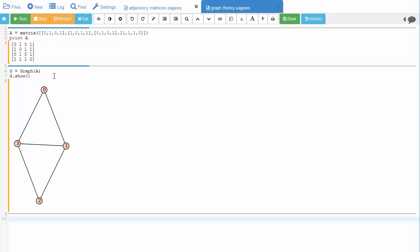One thing to notice is that by default SAGE will label vertices starting at 0, so it's labeled the vertices 0, 1, 2, 3 instead of 1, 2, 3, 4. In this case vertex 0 is like our vertex 1.